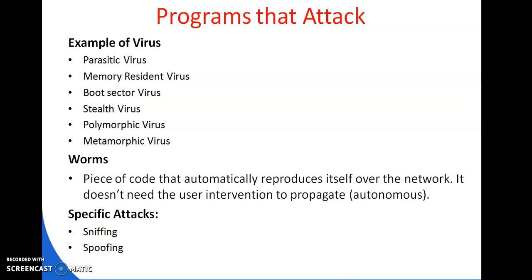In spoofing, the attacker sends packets with an incorrect source address. When this happens, the receiver sends replies back to that spoofed address and not to the attacker. This can lead to three possible cases: the attacker can intercept the reply, the attacker need not see the reply, or the attacker does not want to see the reply.